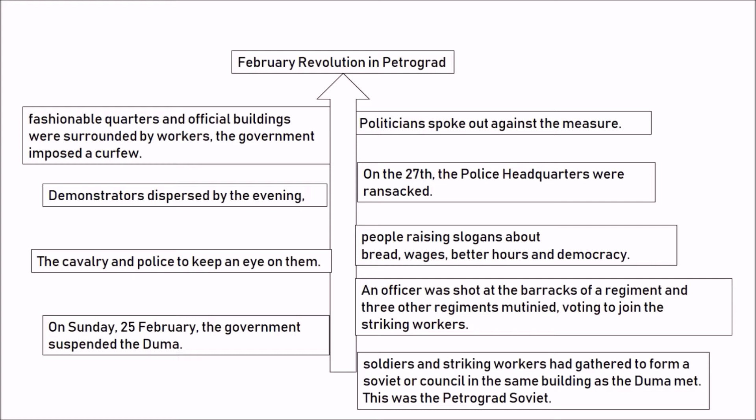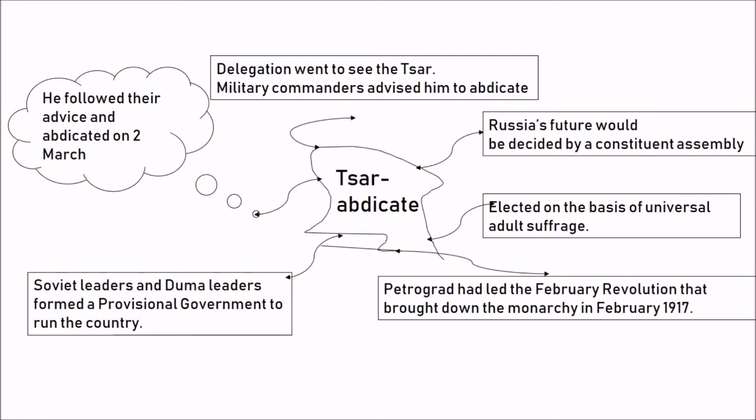The striking workers had gathered to form a Soviet (council) in the same building as the Duma — called the Petrograd Soviet. The Czar followed the advice of Soviet and Duma leaders, who formed a provisional government to run the country. A delegation went to the Czar with military advisors and advised him to abdicate the throne. With no options left, he abdicated on 2nd March. Russia's future was to be decided by a Constituent Assembly based on universal adult franchise. This event, led from Petrograd, came to be popularly known as the February Revolution of 1917.